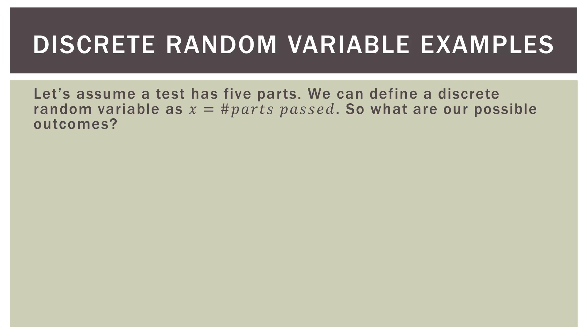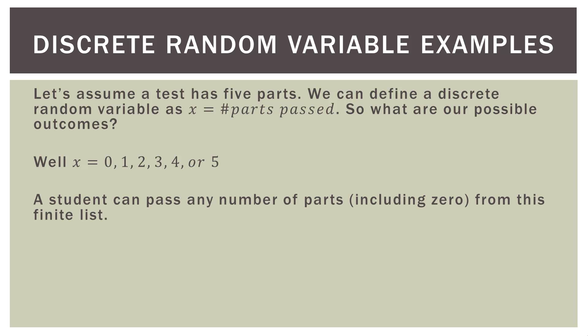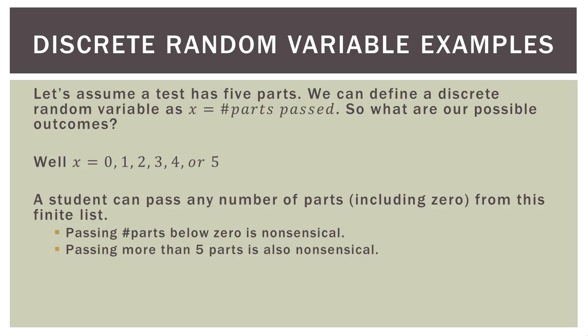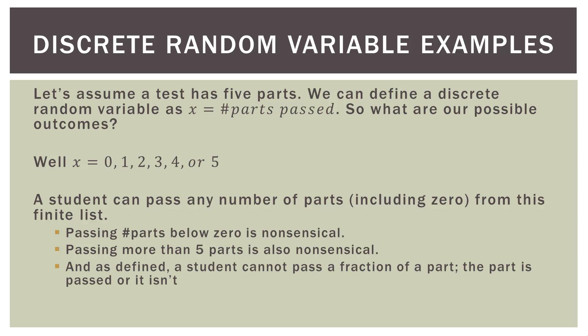Here are some examples. Let's assume a test has five parts. We can define a discrete random variable x as the number of parts a student passes. The possible outcomes are: a student can pass zero, one, two, three, four, or all five parts — a finite number of outcomes from zero to five. Passing fewer than zero parts doesn't make sense, passing more than five is nonsensical since there are only five parts, and a student cannot pass a fraction of a part like three and a half — a part is either passed or it isn't; it comes as a whole unit.